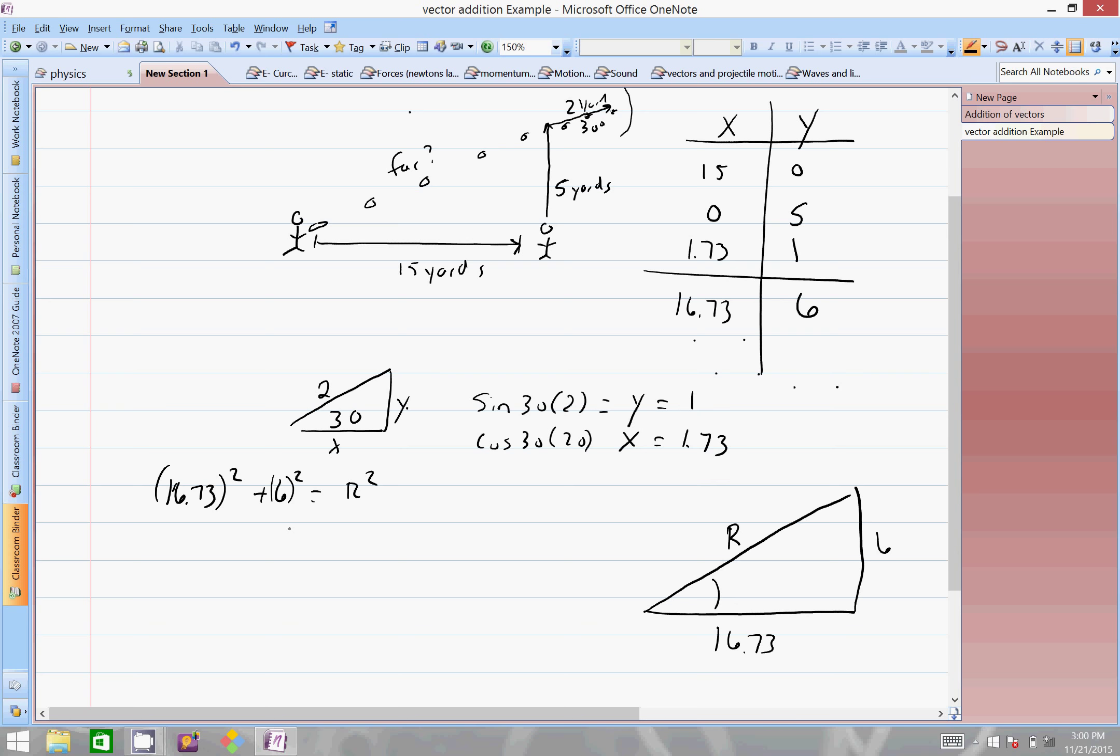Alright, so we can use the Pythagorean theorem to get the r. So it's going to be 16.73 squared plus 6 squared equals r squared. 16.73 squared plus 6 squared, take the square root of that answer, equals r.